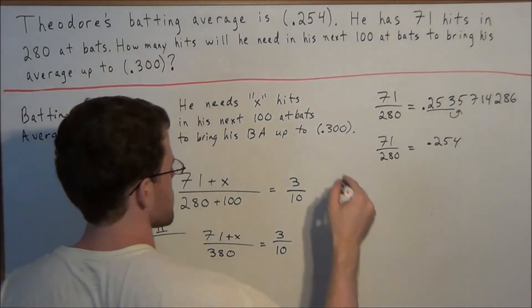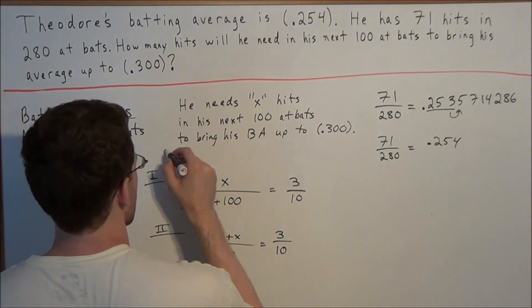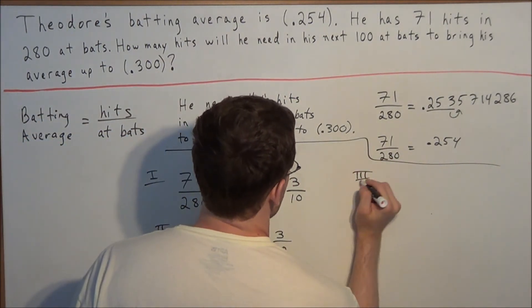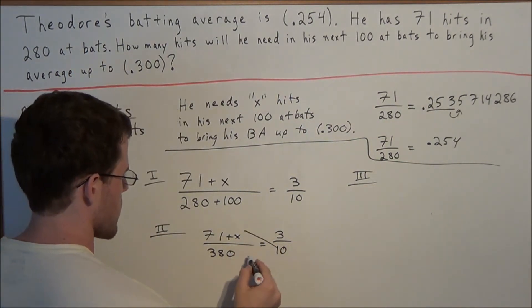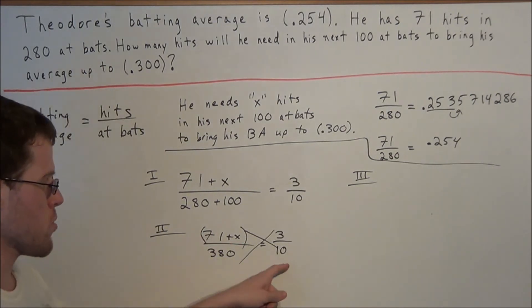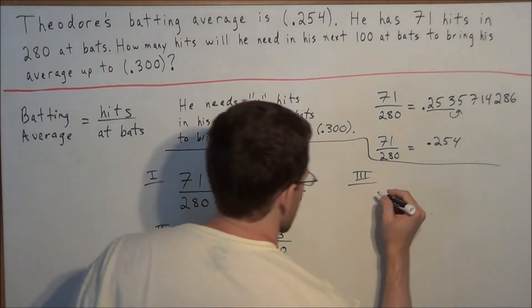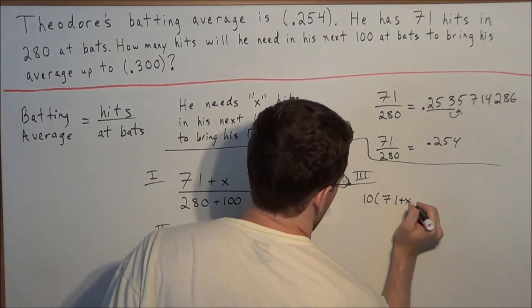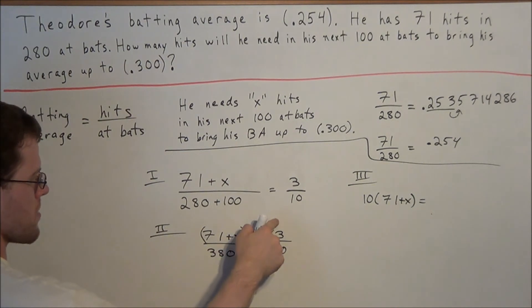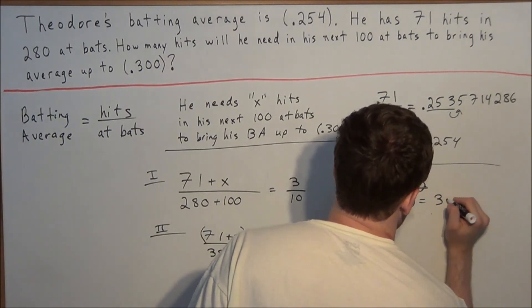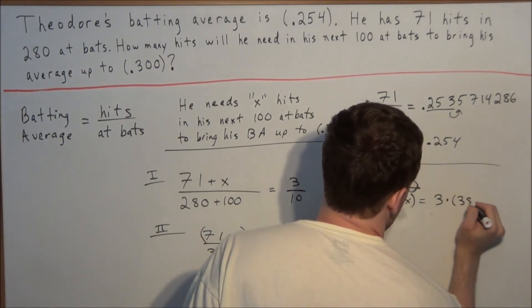So now for the next line in this problem, we'll section off this part here. For the next stage of the problem, we can cross multiply. And now remember, 71 plus x is one piece, so we have to multiply 10 times 71 plus x. So we have 10 times 71 plus x, and we can set this equal to, when we cross multiply on the other side, we have 3 times 380.